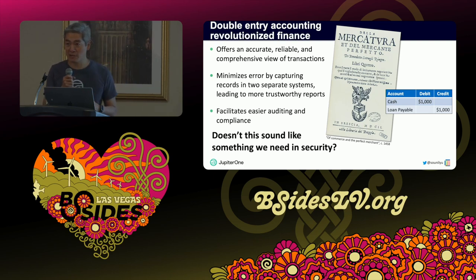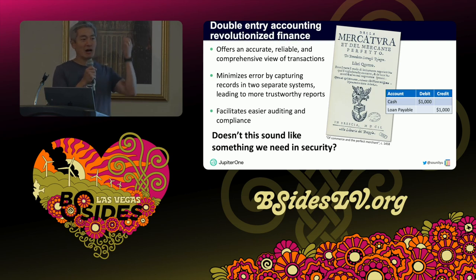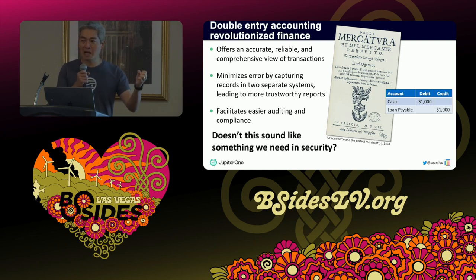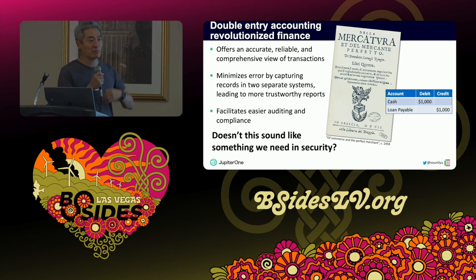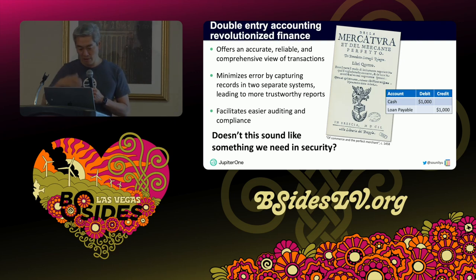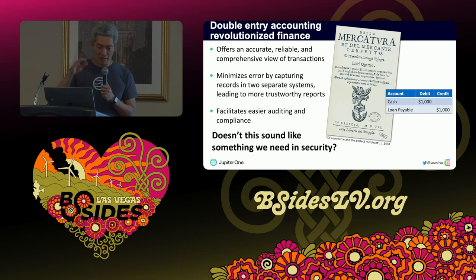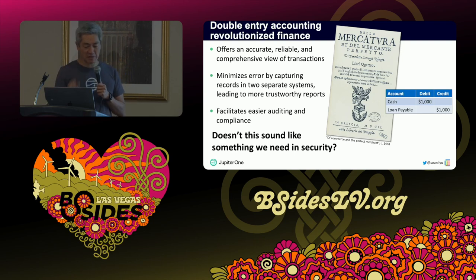Where do we have the opportunity to see double entry accounting type of functions happening in security? You just don't recognize it for what it is. But once you recognize it, you think: how do we make more of those types of systems? How do we ensure those systems can be reinforced? Now, as I talk about this, I have to set some foundational principles.